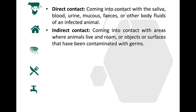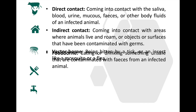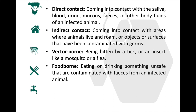Indirect contact involves coming into contact with areas where animals live and roam, or objects or surfaces that have been contaminated with germs. Examples include aquarium tank water, pet habitats, chicken coops, barns, plants and soil, as well as pet food and water dishes. The third way is vector-borne — being bitten by a tick or an insect like a mosquito or a flea. Fourth is food-borne — eating or drinking something unsafe that is contaminated with feces from an infected animal.